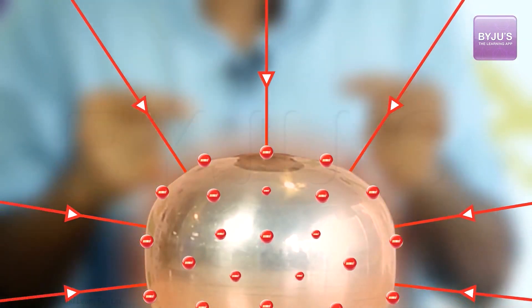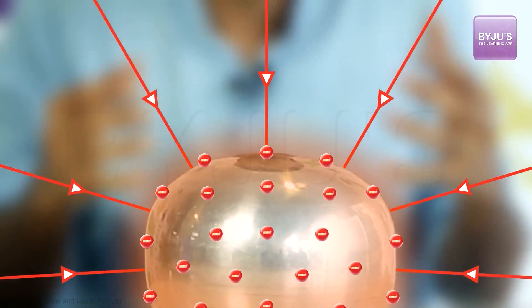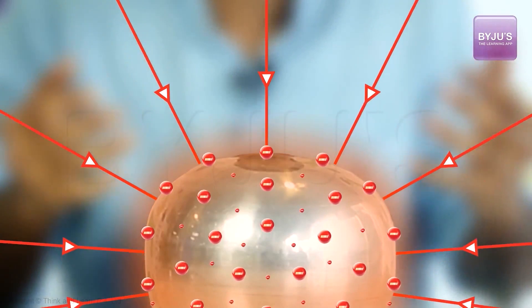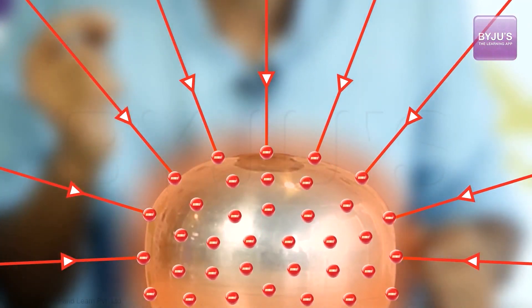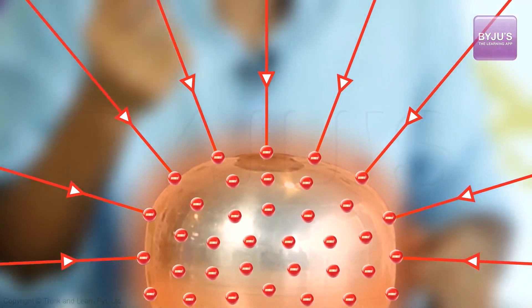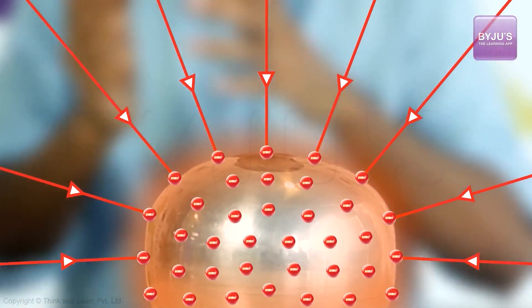Now, as I keep increasing the charge density, will there come a point when this electric field, as it keeps increasing, reaches a value that is going to be high enough, which we now know is 3 × 10^6 volts per meter, so that air will ionize.